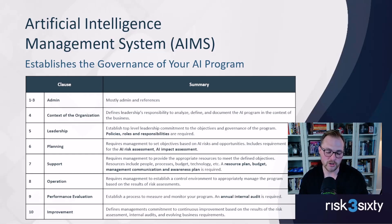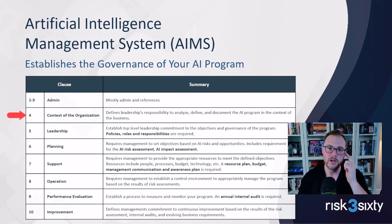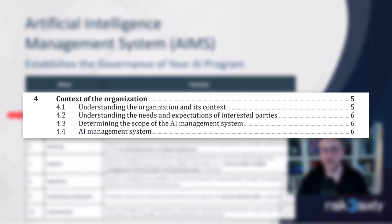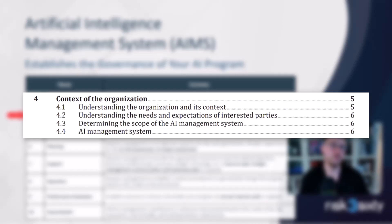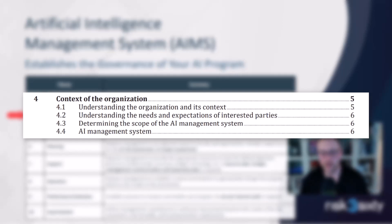Clause four is the context of the organization. When documenting context, you consider: what is leadership's responsibility, who are the internal stakeholders impacted — like your CTO, product team, or legal — and who are the external stakeholders, such as customers or regulators. You also start thinking about the scope of the management system.